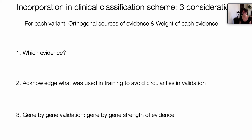Last but not least, we believe that this validation is best done on a gene-by-gene basis because different genes have more data for validation and will have more robust validation. So if validation should be done gene-by-gene, then the strength of evidence should also vary on a gene-by-gene basis — and this is something that should also be taken into consideration.